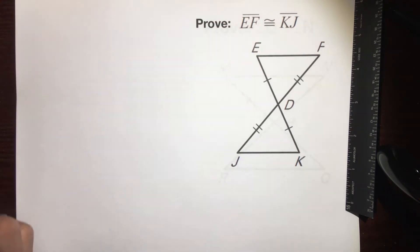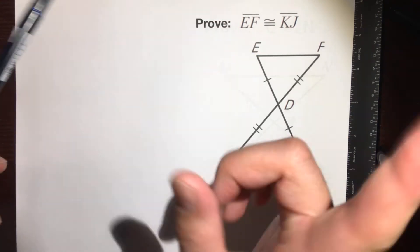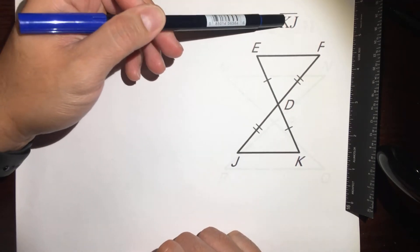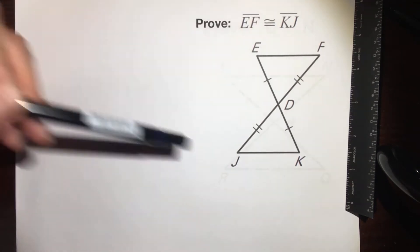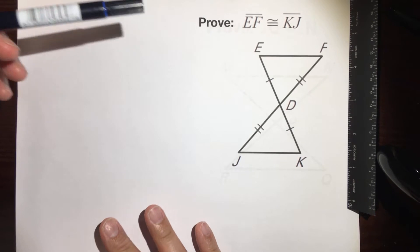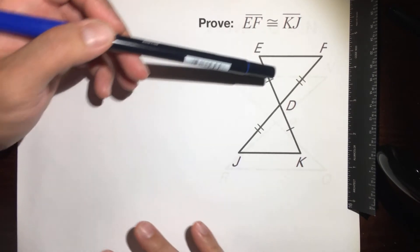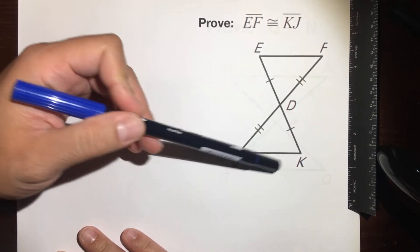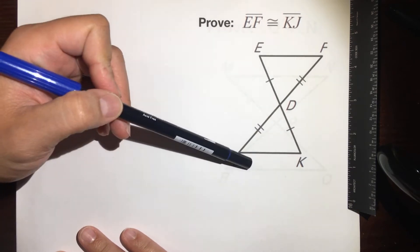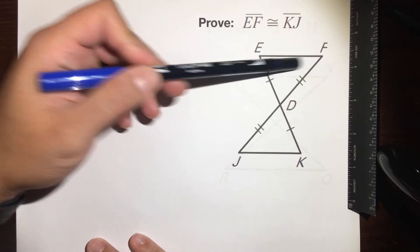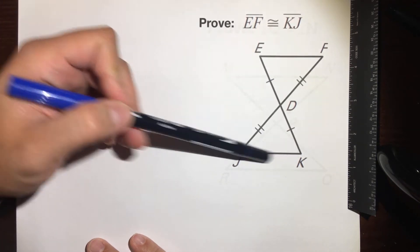Hello, this is Mr. Kinyanola and I'm going to show you how to prove EF is congruent to KJ. So let's look at what we have here. This looks like a problem that asks us to prove that triangle EFD is congruent to triangle KJD, but it's not asking us to prove that. It's asking us to prove that this side is congruent to this side.